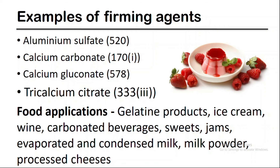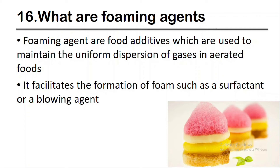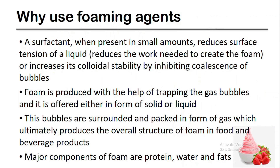Now let's talk about foaming agents. Foaming agents are food additives which are used to maintain the uniform dispersion of gases in aerated foods. They facilitate the formation of foam, such as a surfactant or a blowing agent. A surfactant, when present in small amounts, reduces the surface tension of a liquid or increases its colloidal stability by inhibiting collisions of bubbles. Foam is produced by trapping gas bubbles and is offered either in solid or liquid form. These bubbles are surrounded and packed in the form of gas, which ultimately produces the overall structure of foam in food and beverage products. Major components of foam are protein, water, and fats.